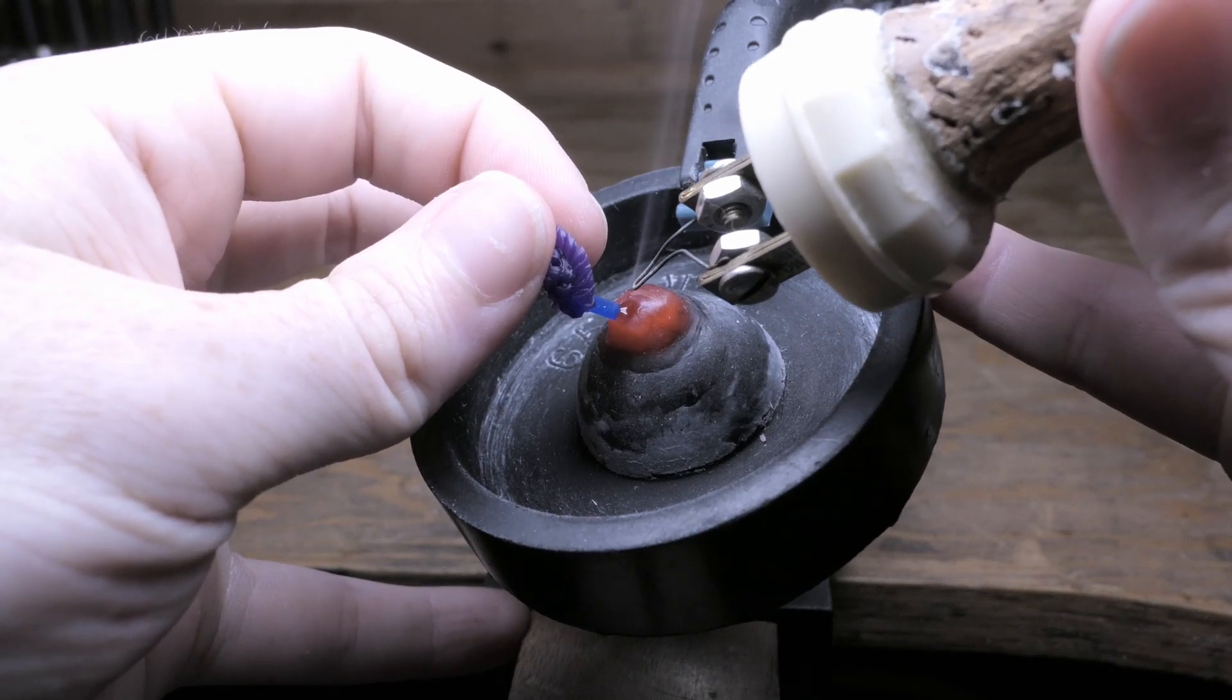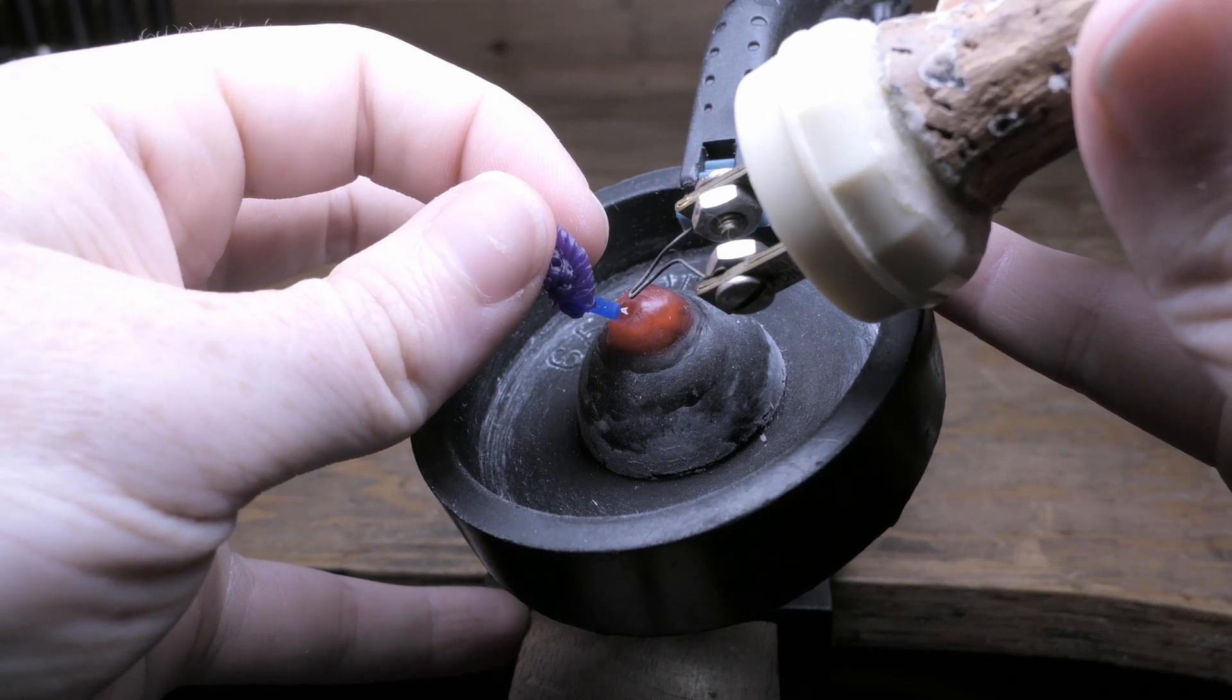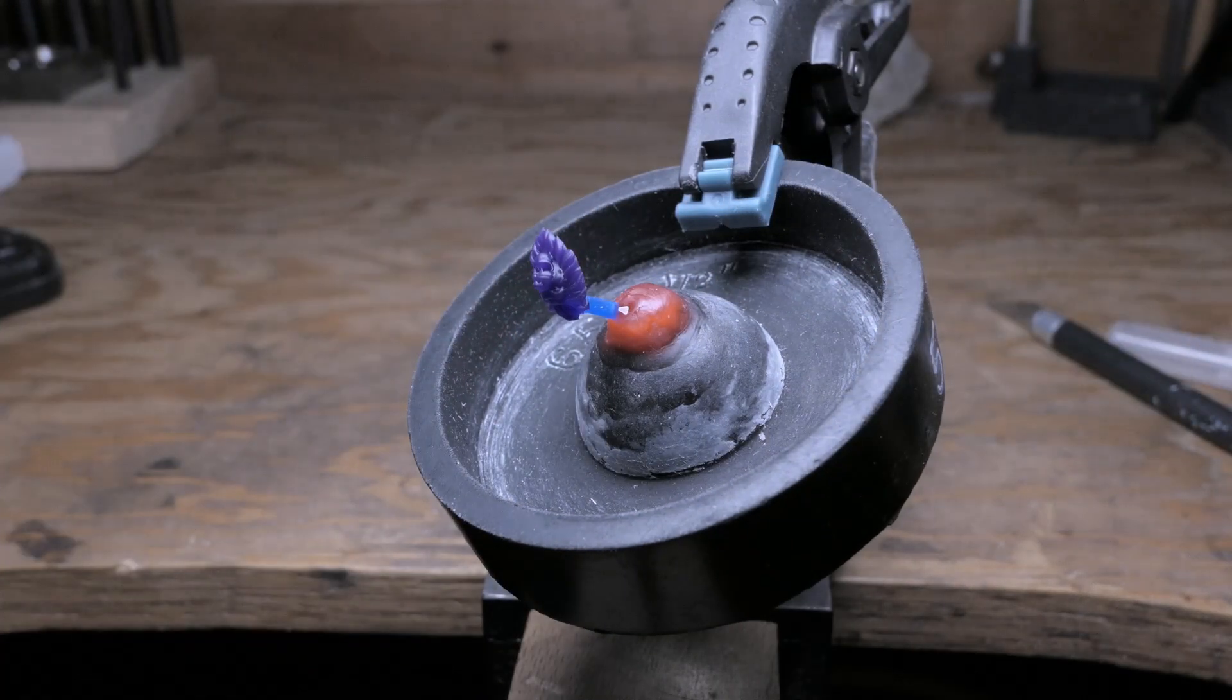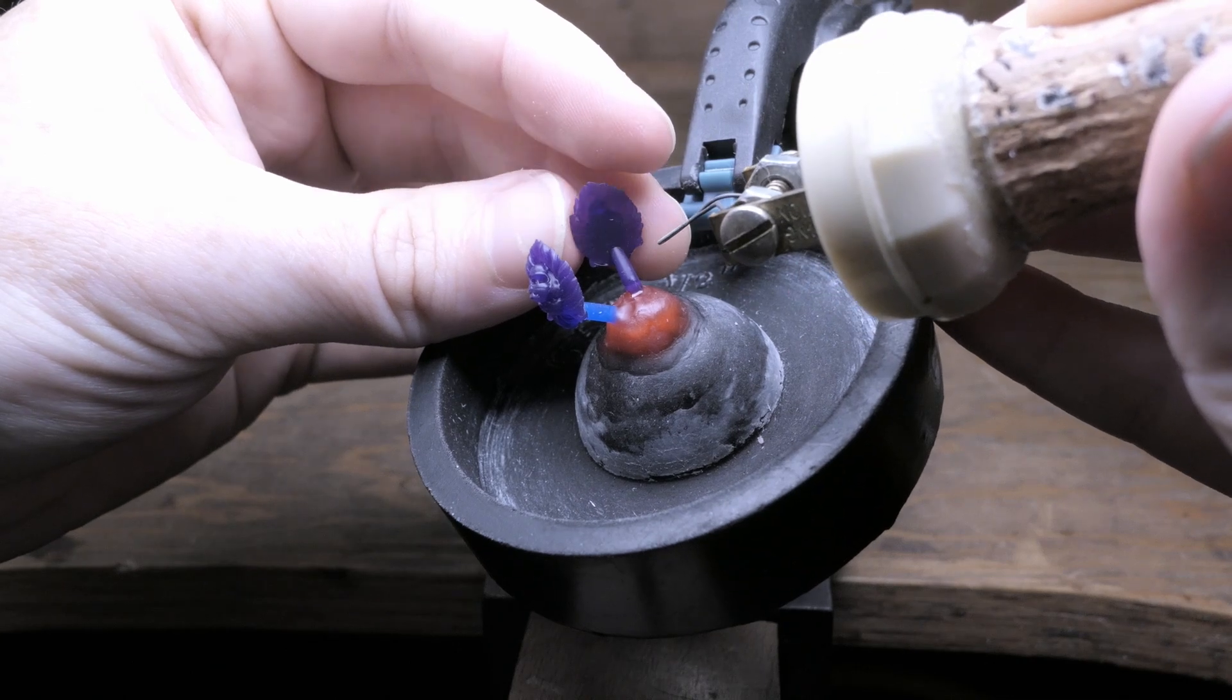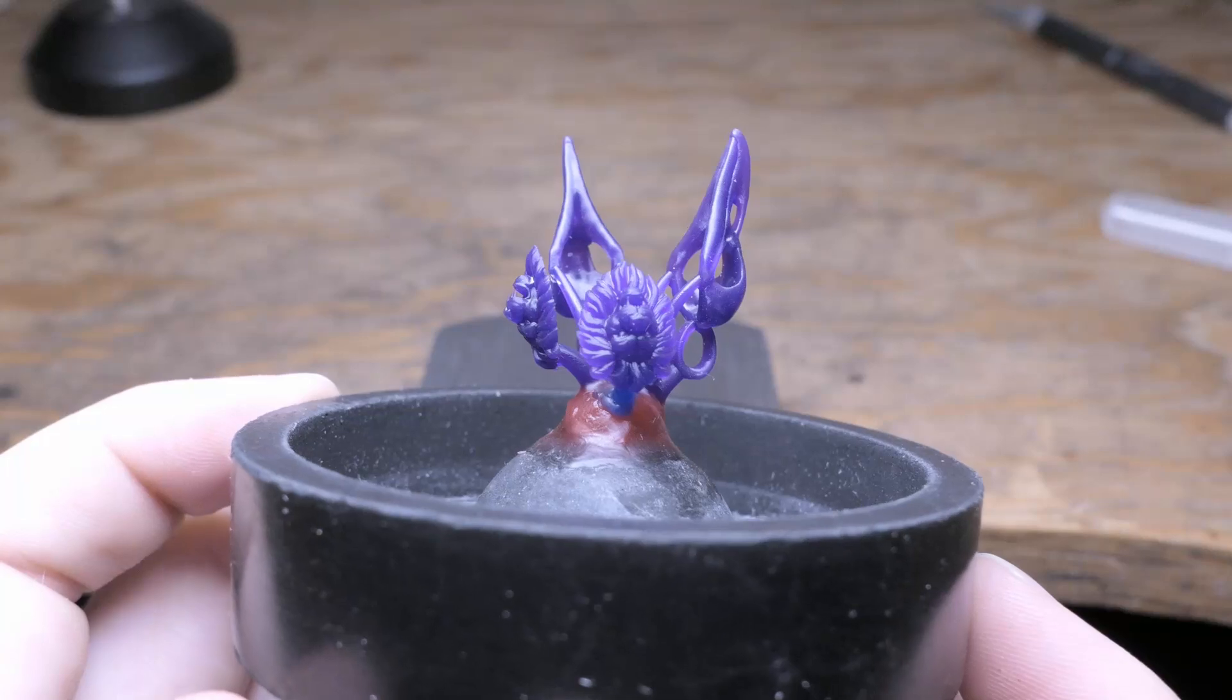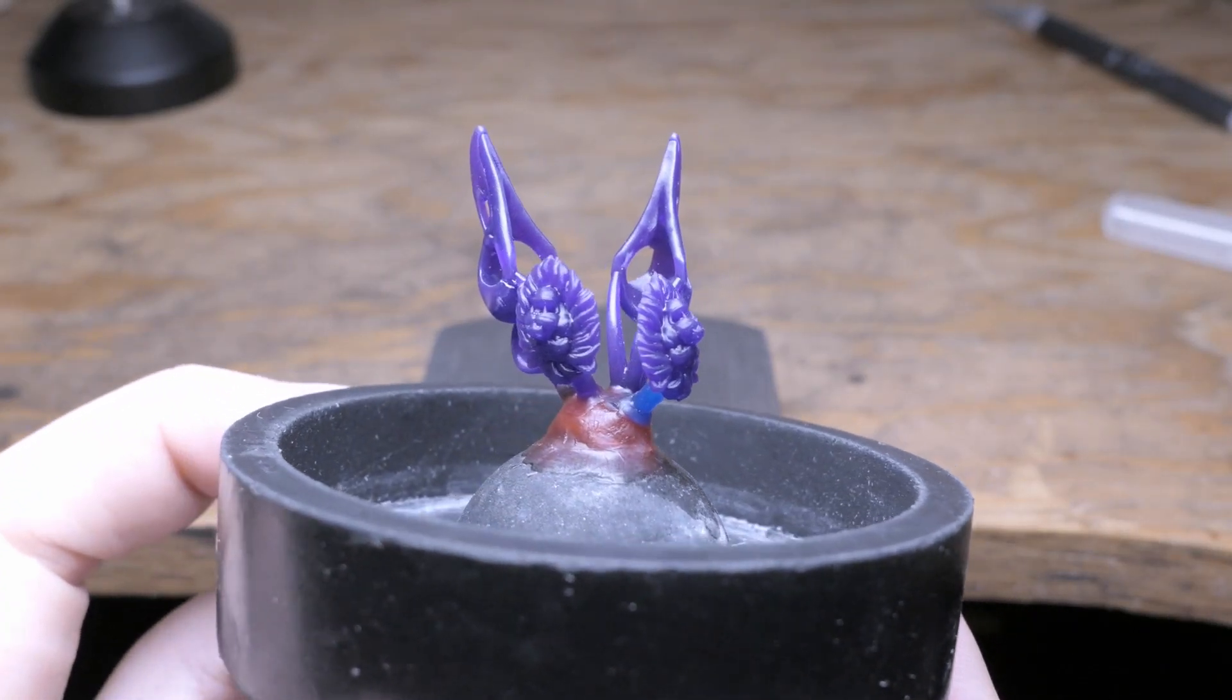So now I'm just going to attach these prints to the sprue base to get them ready for casting. And I'm going to be going with your guys' recommendation of doing the ring in silver and the lion head in bronze, which I think will look really cool in the end.